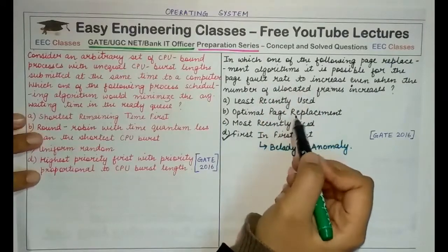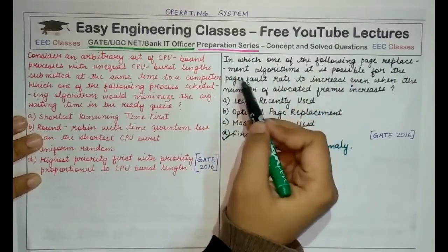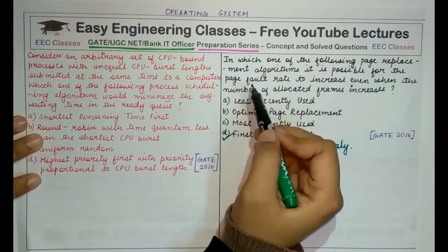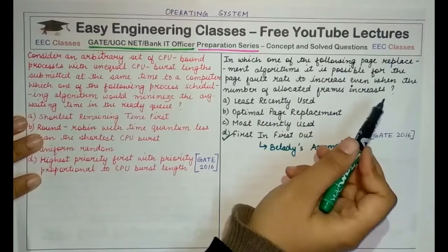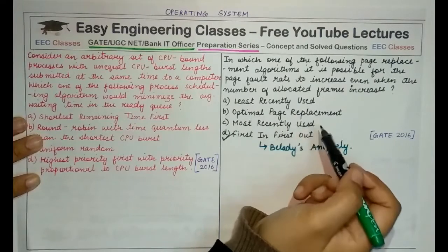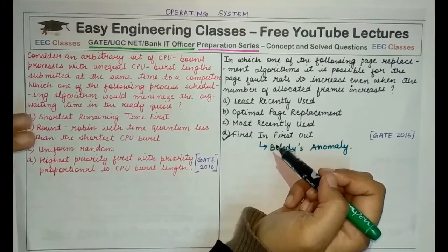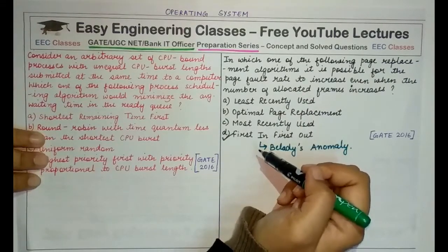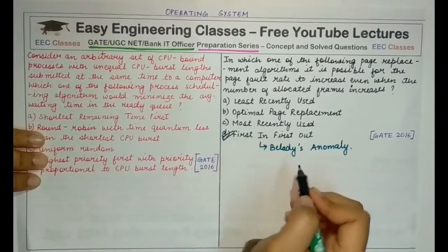Today we'll start with the second question first. The question asks: in which one of the following page replacement algorithms is it possible for the page fault rate to increase even when the number of allocated frames increases? We're given four options that are names of page replacement algorithms. If you're familiar with Belady's anomaly or stack algorithms, this question is very easy and option D is a clear-cut answer.